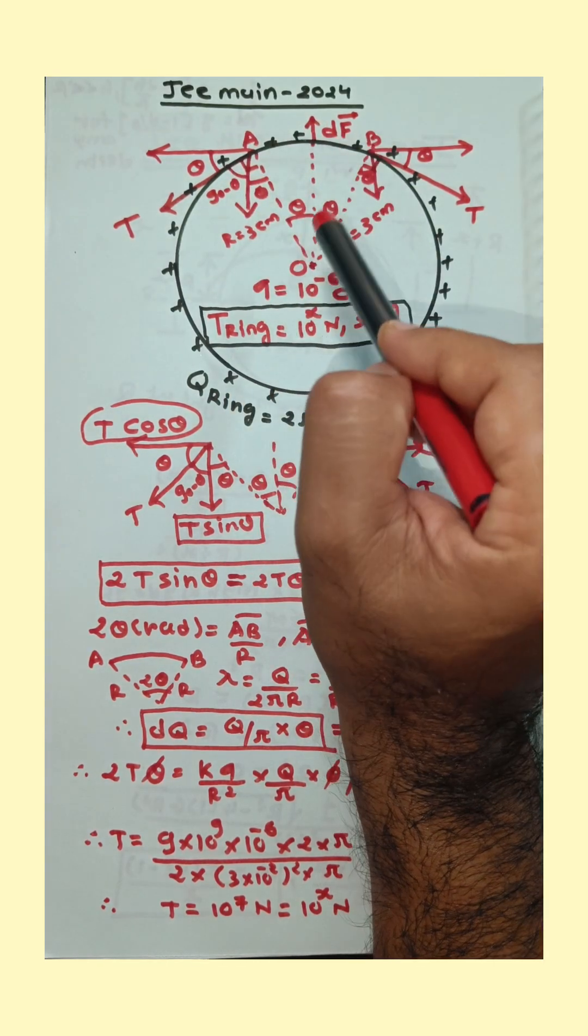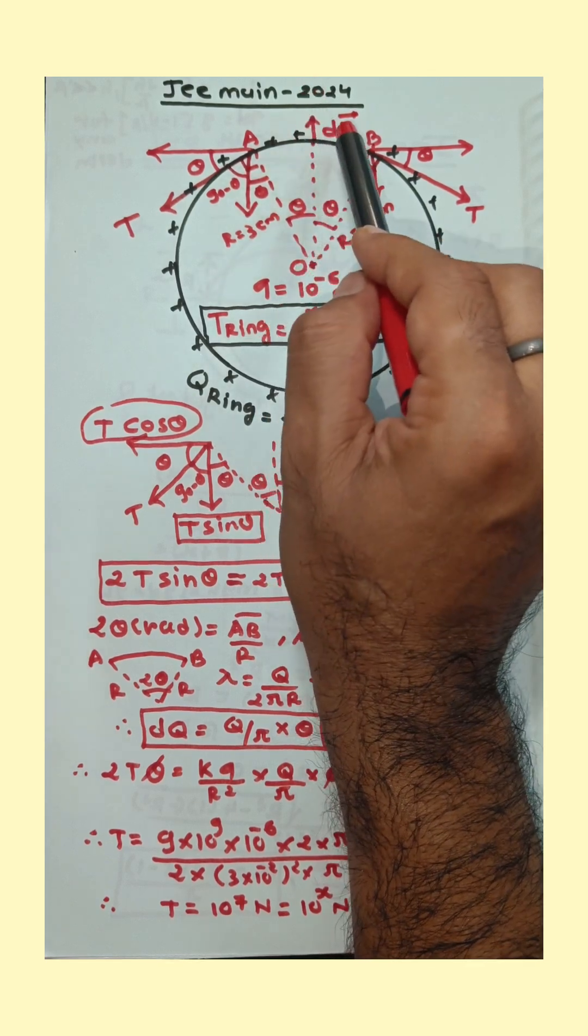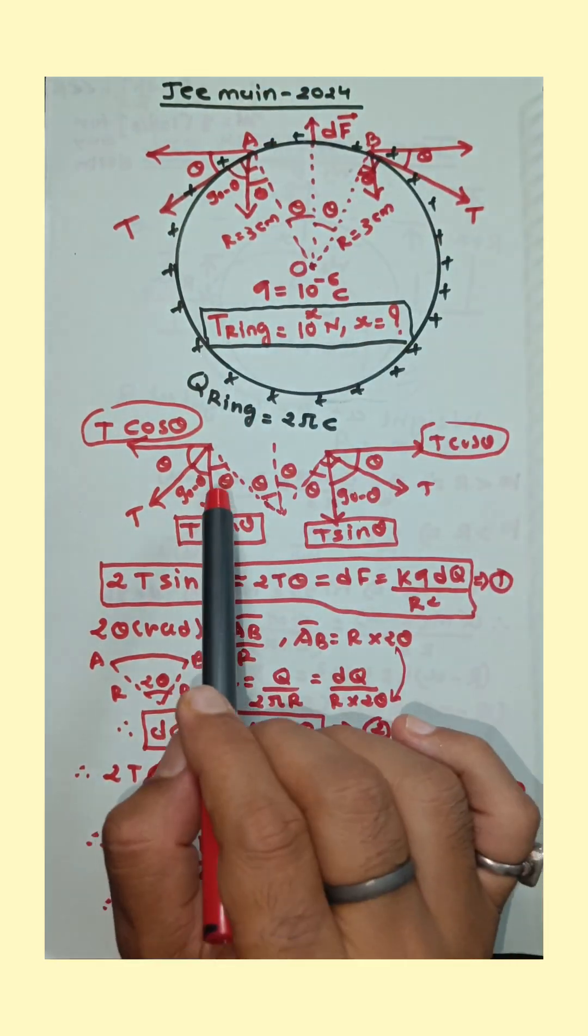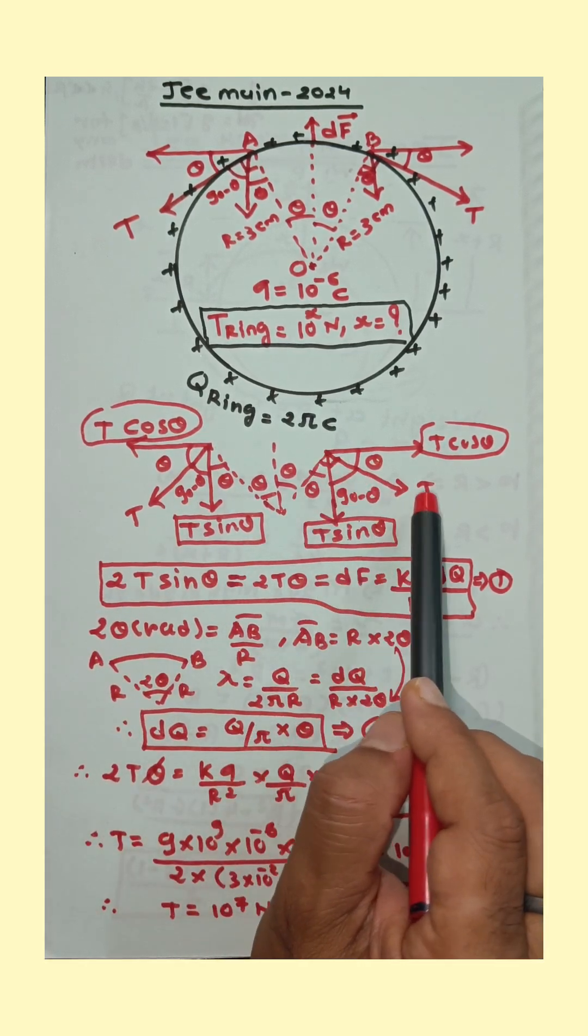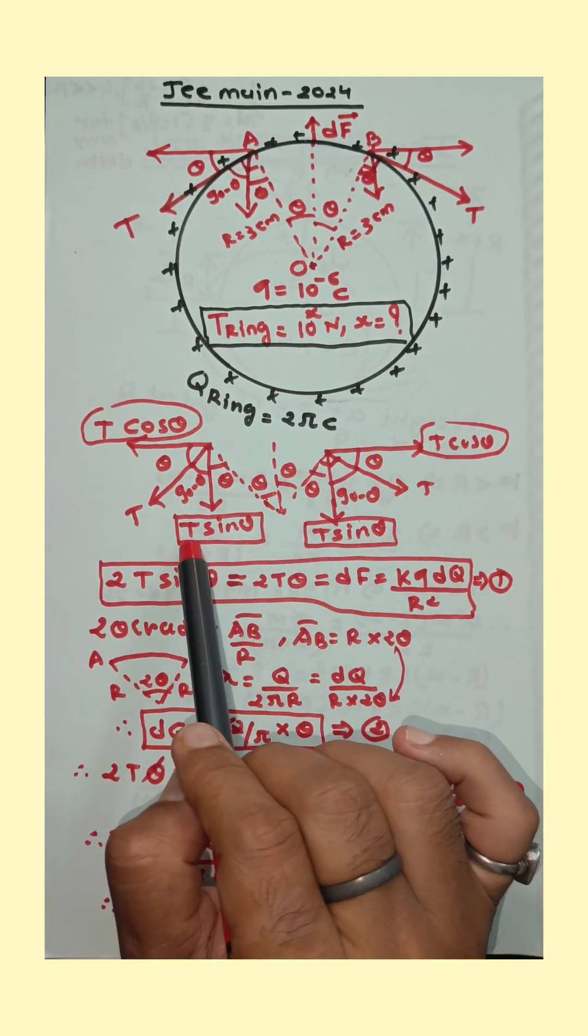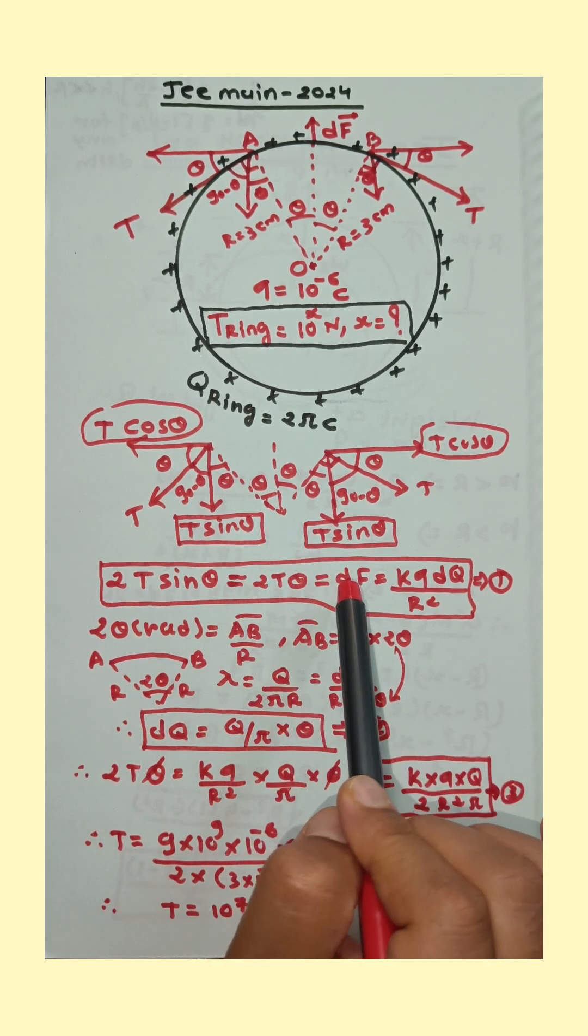Charge on AB is supposed dq. Force applied by small q on dq, that is the repulsive force, it means df. Now here consider two components of tension T cos theta, T sin theta. Here also two components T cos theta, T sin theta. Total downward force is 2T sin theta that is balanced by df.